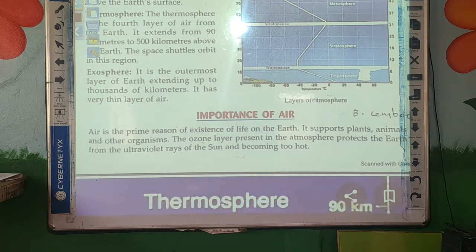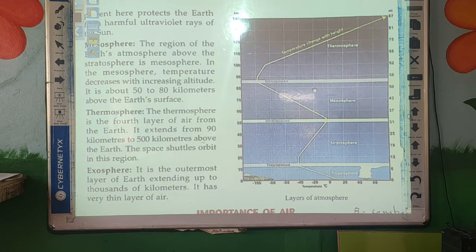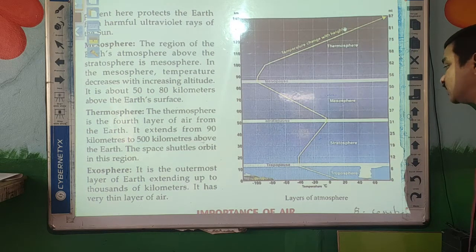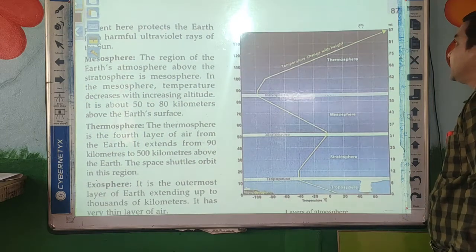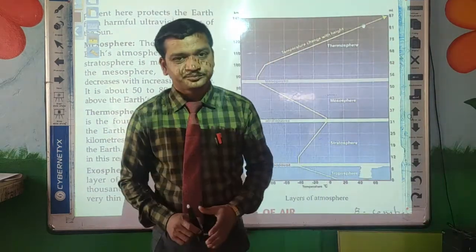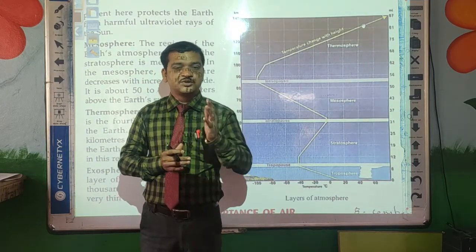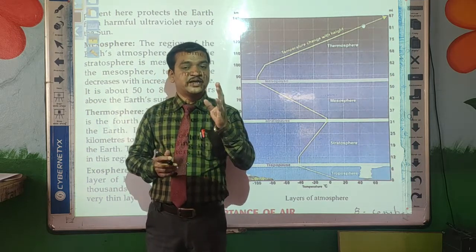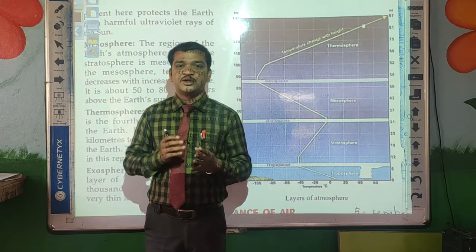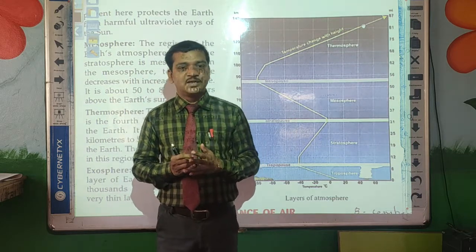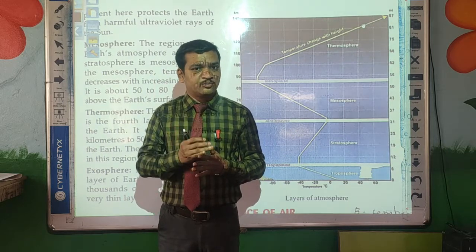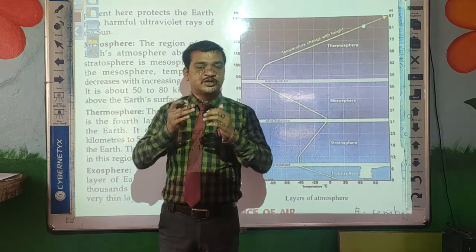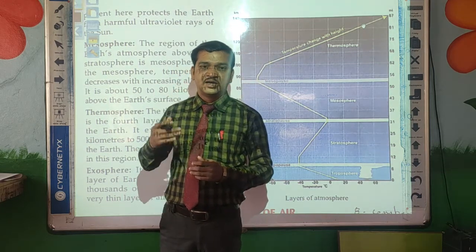The last layer is the Exosphere — the outermost or fifth layer of the atmosphere, extending up to thousands of kilometers away from the Earth. So today we have learnt about the five layers of atmosphere: first Troposphere, second Stratosphere, third Mesosphere, fourth Thermosphere, and last Exosphere. The remaining part of this lesson we will continue in our next video. Thank you.